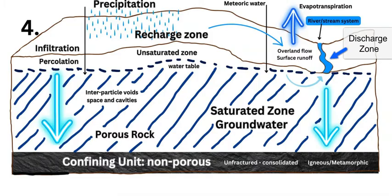Step four looks at the recharge zone and the discharge zone. The recharge zone is the area on the surface — the landscape, terrain, and relief — where precipitation occurs and water infiltrates and percolates down into the groundwater, into the saturated zone below the water table. The unsaturated zone, which holds some water but is not completely full, is also called the vadose zone (V-A-D-O-S-E). The recharge zone can cover the entire landscape or be limited to a small area depending on surface rock type, soil compaction, soil type, climate, or rain shadow effects.